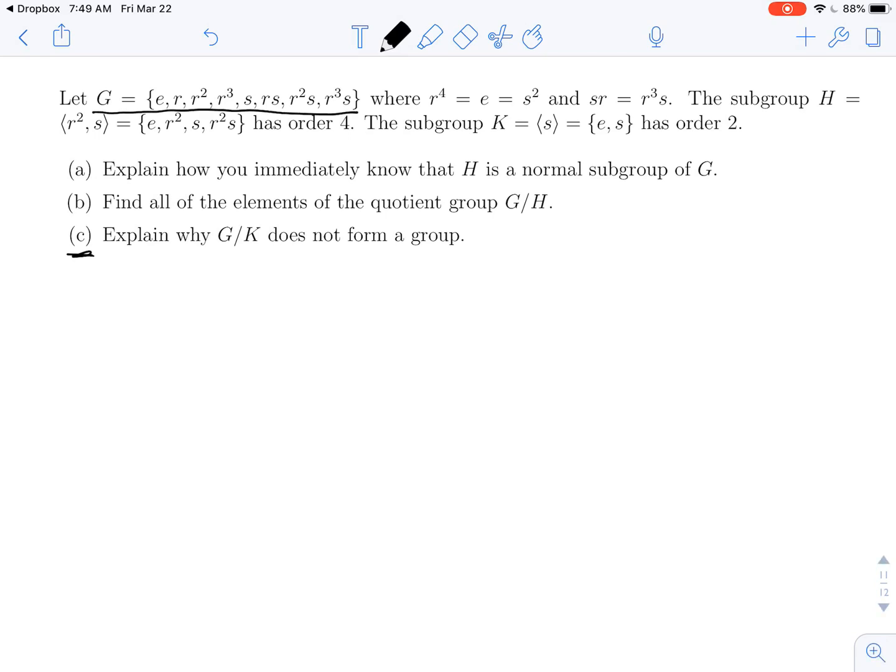The elements were E, R, R squared, R cubed, S, RS, R squared S, R cubed S, where we knew that R to the fourth was the identity, we knew that S squared was the identity, and this told us how we could commute elements. SR is not RS, it's R cubed S.